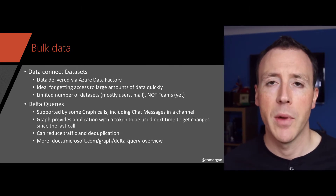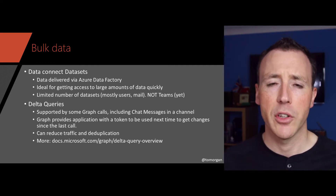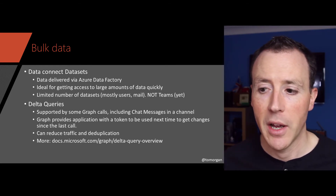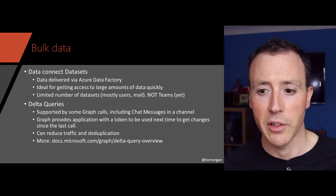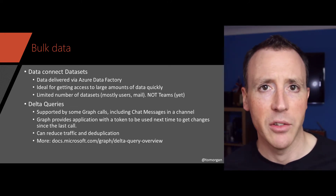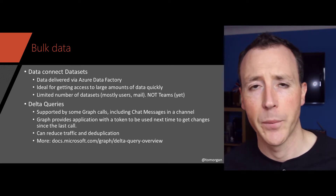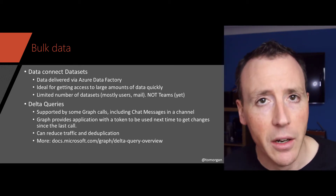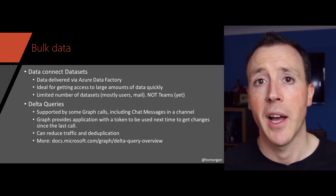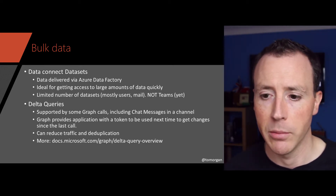If you want to download large amounts of data in Graph, you should really look at data sets and data connect data sets. Big gotcha — it's not supported across all workloads. Specifically, Teams is not supported as a workload, but users and mail is. If your application uses Teams information but also uses some of those other workloads, you might find this useful. This is ideal for getting access to large amounts of data very quickly, and the data gets delivered to you via Azure Data Factory, enabling you to quickly ingest it into your ongoing systems.